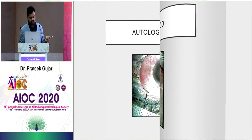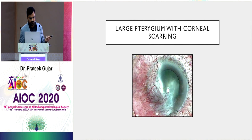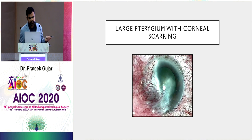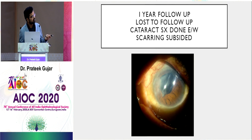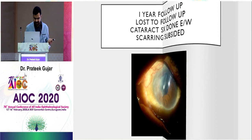For a large pterygium: the dissection technique is essentially the same; use the algal brush to smooth things out. This patient at one year follow-up shows subsided scarring. The patient was so happy that he underwent cataract surgery in a camp. No recurrence of pterygium.